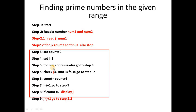For the range, we read two numbers: num1 and num2. For example, if the range is 10 to 30, num1 is 10 and num2 is 30. We initialize j equal to num1. We increment j one after the other and find the factors of each value of j, which is why we initialize num1 to j.